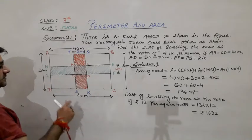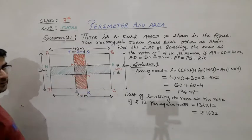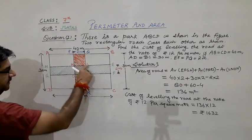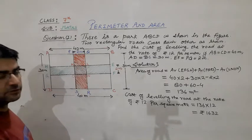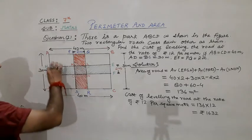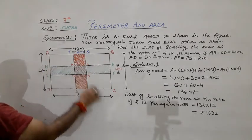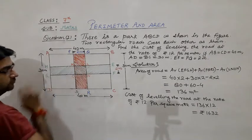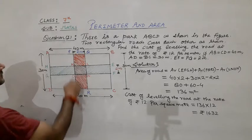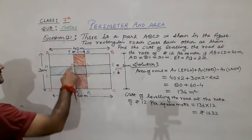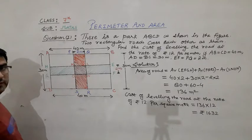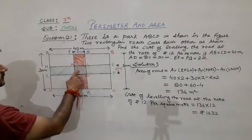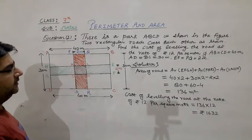Just notice that the square MLNO, this area comes two times, that is twice. When we calculate the area of EFGH, MLNO is included, and when we calculate the area of PQRS, again this MLNO will be included. So we will subtract this area one time.